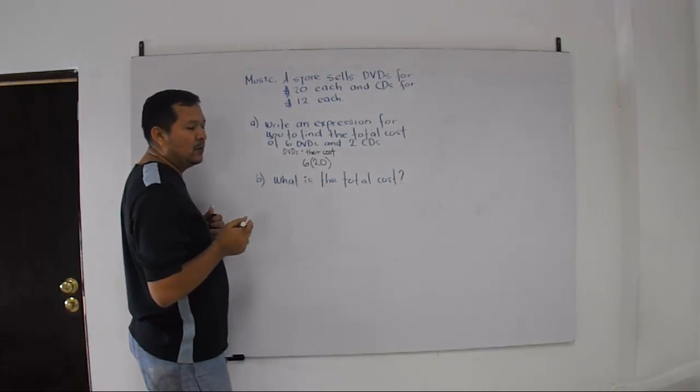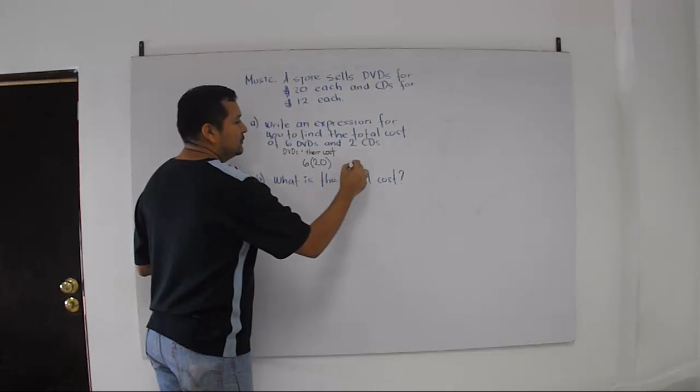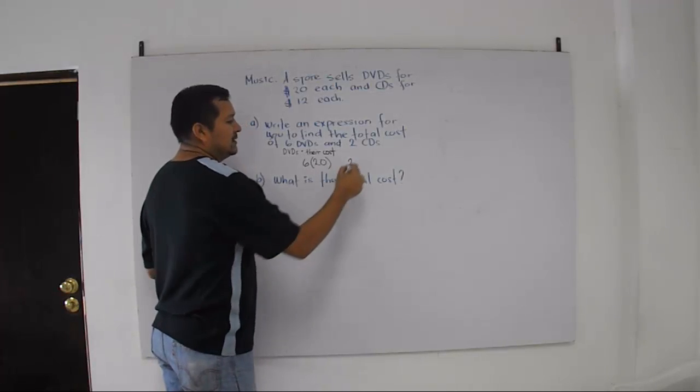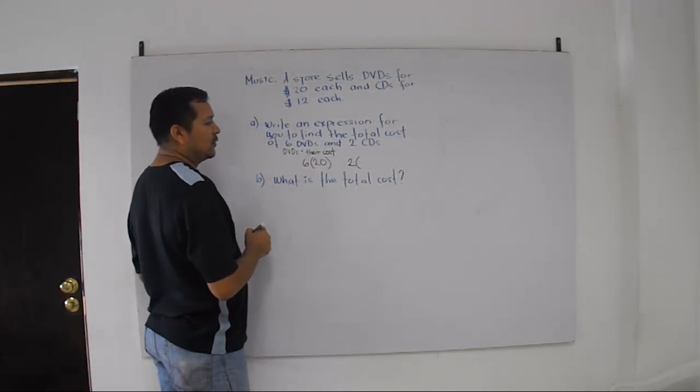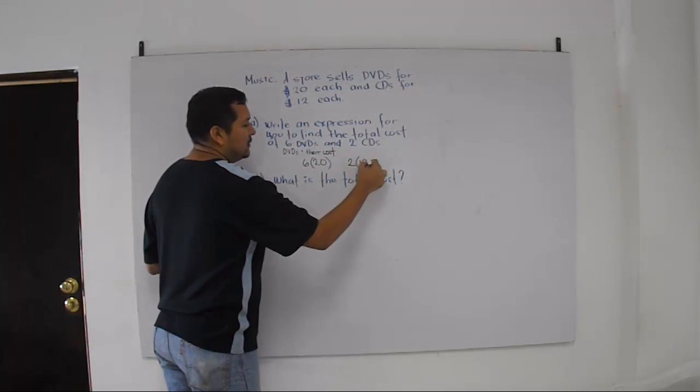Good. But now we have to find the CDs. Two CDs times their cost. Their cost is $12.